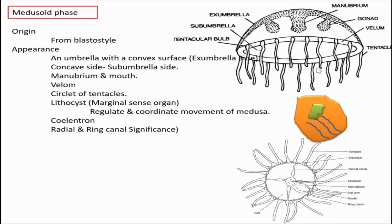Lithostyle is a sense organ present alternately at the base of the tentacles — that is, not at every tentacle base but alternating ones. This sense organ regulates and coordinates the movement of the medusa. Its structure is sac-like, present at the base of the tentacle, containing a calcareous material and some sensory cells.